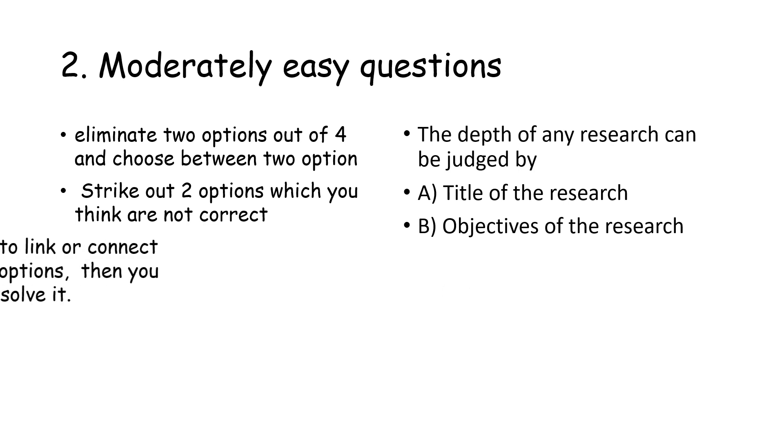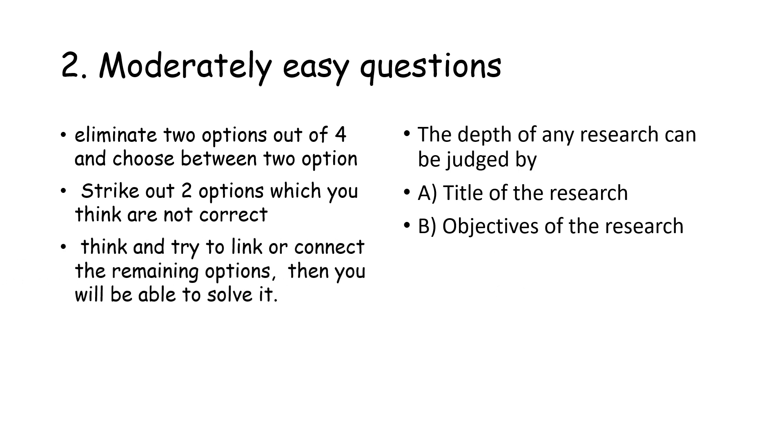With the remaining two options, if you can put your mind to it and think and try to link or connect the remaining two options, then you will be able to solve it. Here, option A, title of the research will give you a vague idea about your research, and option B, objectives of the research will give you a broader picture of your research work. So therefore, out of the two options, the answer is option B, objectives of the research. In this way, by eliminating two options out of the four given options will increase your probability in getting the right answer.